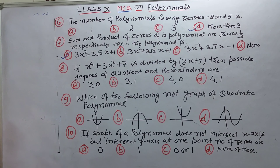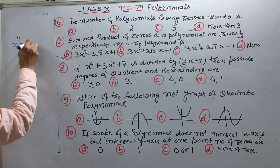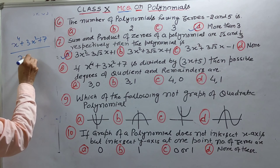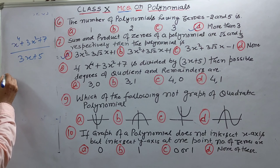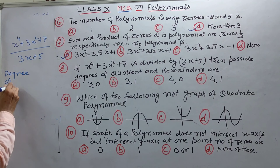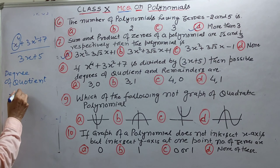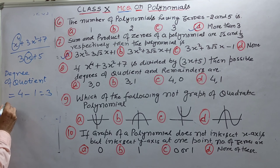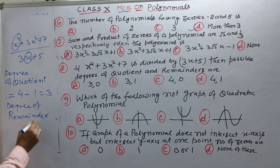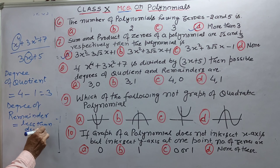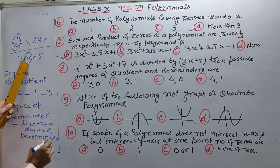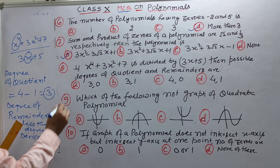Question number eight: polynomial x power 4 plus 3x square plus 7 is divided by 3x plus 5. Degree of quotient = degree of numerator minus degree of denominator = 4 minus 1 = 3. Degree of remainder — yeh yaad rakh lijiye — degree of remainder is less than degree of denominator. Denominator ki degree 1 hai, aur isse kam zero hogi. So degree of quotient is 3 and degree of remainder is 0. Answer is A.